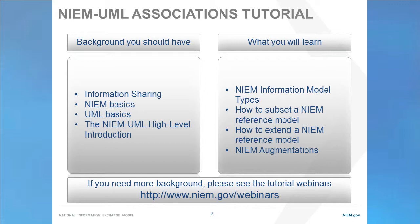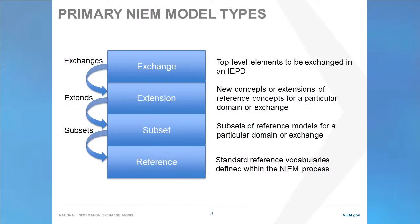If you need more background, please see the tutorial webinars on the NIEM.gov website. NIEM defines specific types of models for specific purposes. The most general is a reference model, which contains content intended to be reused across multiple exchanges. A subset defines just the parts and pieces of a reference model needed for a particular purpose, whereas an extension adds new concepts or specializes existing ones. An exchange identifies the particular document types that travel between exchange partners.